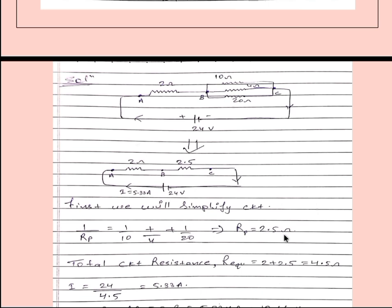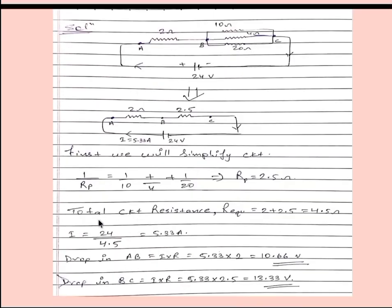After simplifying, we can take the equivalent of these three resistances which are connected in parallel. So 1 by Rp means resistance in parallel. We will get Rp is equal to 2.5 ohm. After calculating these all three resistances we will get 2.5 ohm. Now this circuit can be simplified in this circuit. 2 ohm and 2.5 ohm.